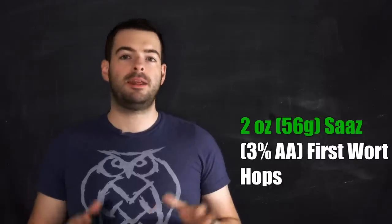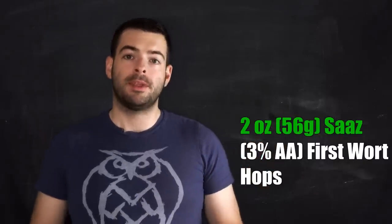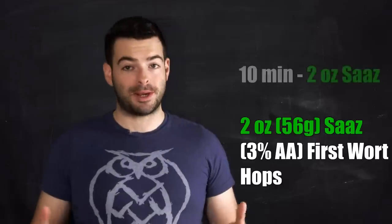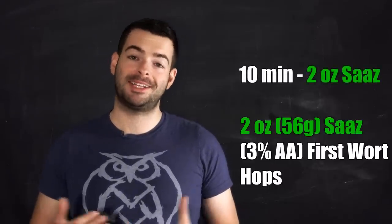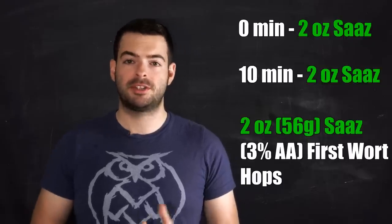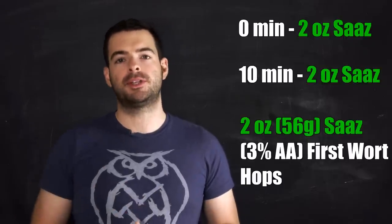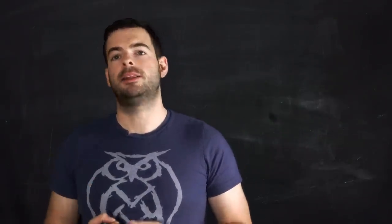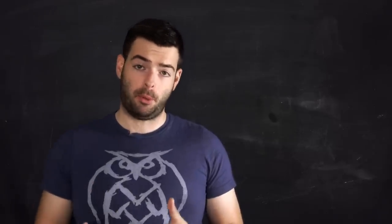Then we're not going to do anything for a 90-minute boil until 10 minutes from the end where we will toss in another 2 ounces of Saaz. And then lastly, to top it off, we'll toss in 2 more ounces of Saaz at 0 minutes. So pretty heavy on the late boil on this one because we don't necessarily want a ton of bitterness like we did with the German Pils. We want a little bit more of that flavor, a little bit more of that aroma, especially with Saaz, which is pretty cool.